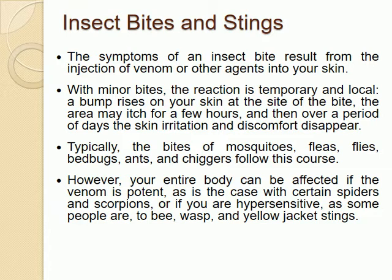Insect bites and stings. The symptoms of an insect bite result from the injection of venom or other agents into your skin. With minor bites, the reaction is temporary and local — a bump rises on your skin at the site of the bite, the area may itch for a few hours, and over a period of a day the skin irritation and discomfort disappear. Typical bites of mosquitoes, fleas, flies, bed bugs, ants and chiggers follow this course. However, your entire body can be affected if the venom is potent, as is the case with certain spiders, scorpions, or if you have hypersensitivity, as some people do, to bee, wasp and yellow jacket stings.